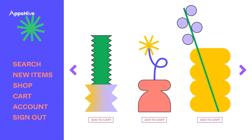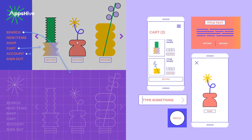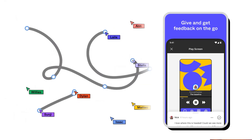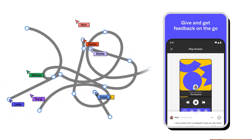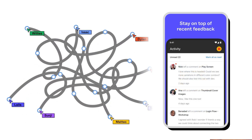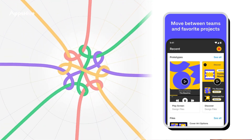The first app is Figma. It's a powerful design tool that allows you to create product designs, UI/UX elements, and prototypes. With its intuitive interface and real-time collaboration features, Figma is an excellent tool for UI/UX designers.